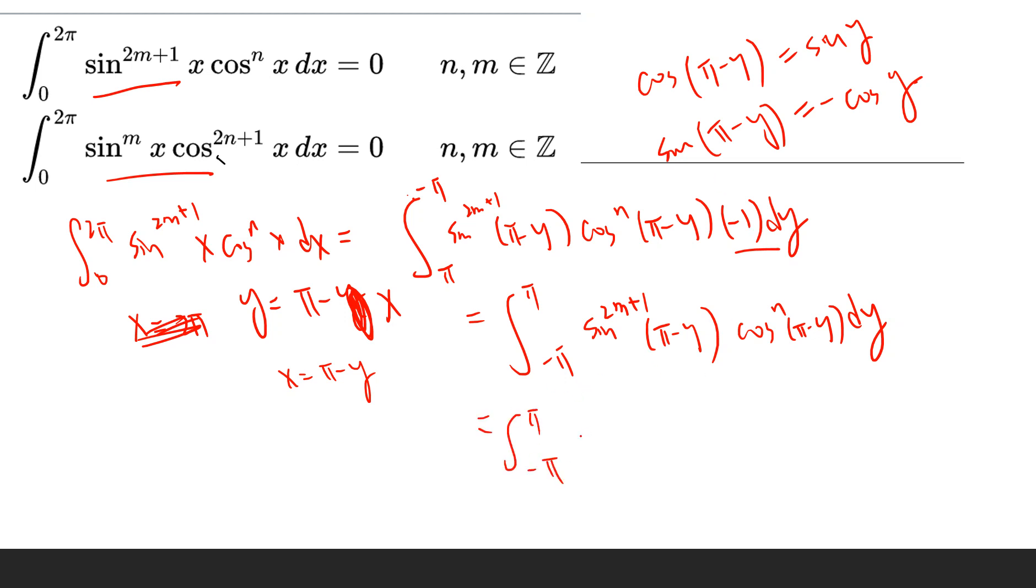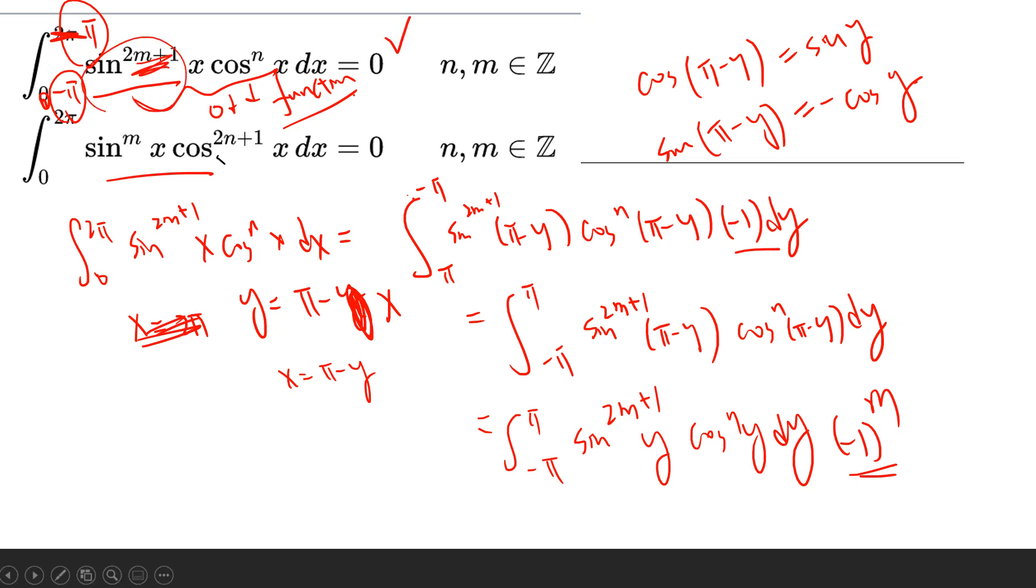But there's a negative sign here, but we don't care about it. Basically, we just change this integration so it goes from negative π to π. But the key point is that this is an odd function. Since sine is an odd function and there's this power, if you go from π to negative π, then definitely this is zero, since this is an odd function.